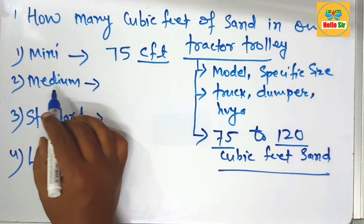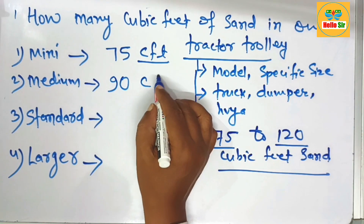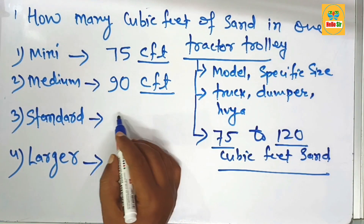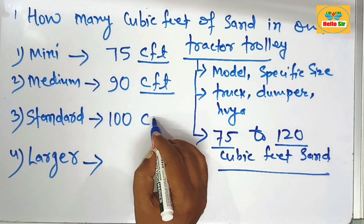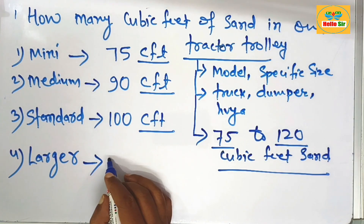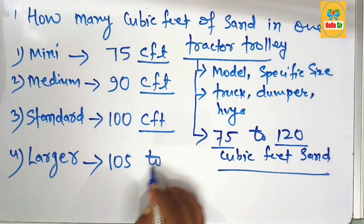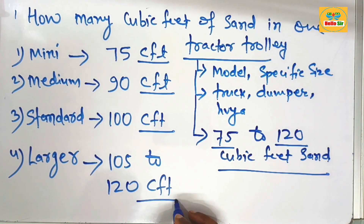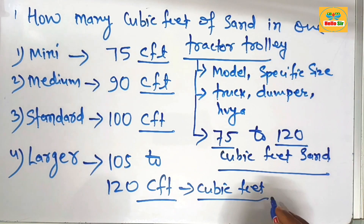A medium tractor trolley can hold about 90 cubic feet of sand material. A standard tractor trolley can hold about 100 cubic feet of sand material. A larger tractor trolley can hold 105 to 120 cubic feet — cft means cubic feet.